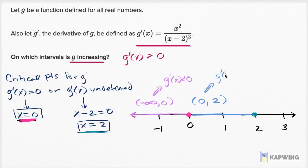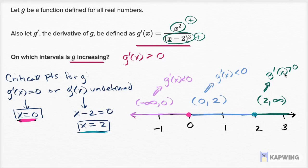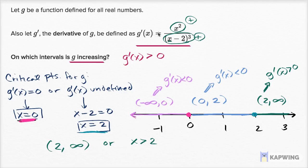Then for the interval from two to infinity: the numerator is positive, and in the denominator you're taking values greater than 2, subtracting 2 gives a positive value, and taking the third power keeps it positive. So this is the interval where g prime of x is greater than zero. On which intervals is g increasing? Where g prime of x is greater than zero: from two to infinity, or x is greater than two.